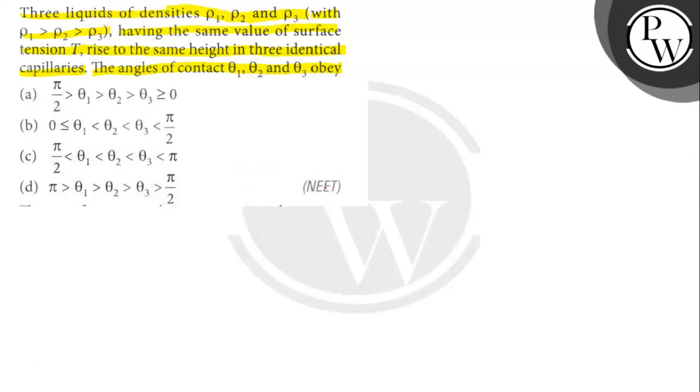So rise of a liquid in a capillary tube is given by H equals to 2T cos θ divided by R Pg. Or cos θ equals to Hr Pg divided by 2T.